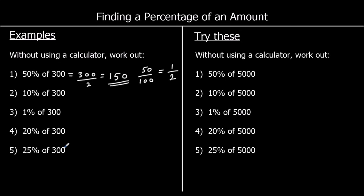Question 2 asks us for 10% of 300. 10% is 10 hundredths, which simplifies to 1 tenth. So whenever we're asked to find 10%, we want one-tenth of that amount, and to find that, we divide by 10. So 300 divided by 10 is 30.